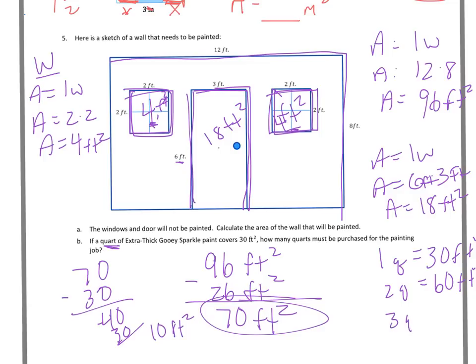So if I get 3 quarts that'll be 90. And I know that 60 is not going to cover enough of 70 but 90 is going to be too much. I still have to purchase the 3 quarts because we can't purchase anything less than a quart in terms of this.